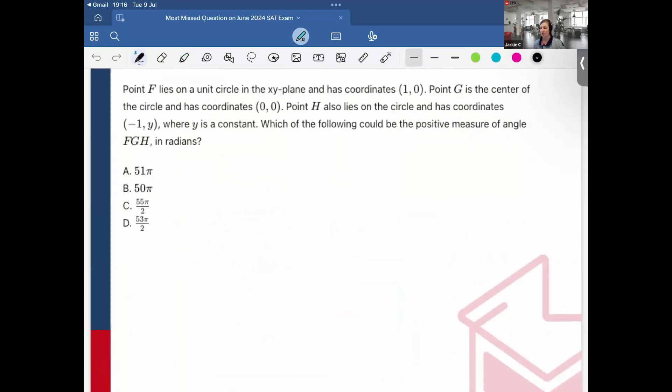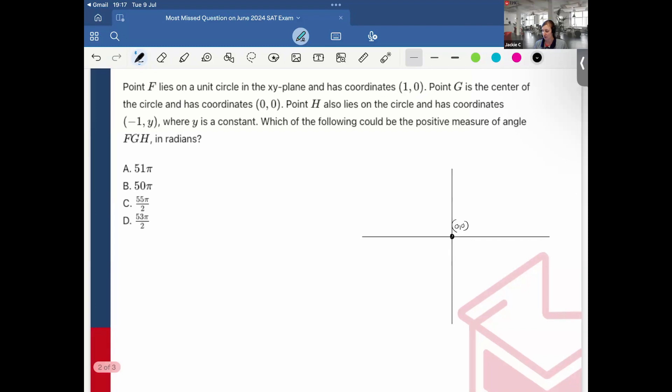Okay, so first it says point F lies on a unit circle in the xy plane and has coordinates (1, 0). Point G is the center of the circle and has coordinates (0, 0). Point H also lies on the circle and has coordinates (-1, y), where y is a constant. Which of the following could be the positive measure of angle FGH in radians? So this would be F, this is G, and then I'm also told that H also lies on the circle and has coordinates (-1, y).